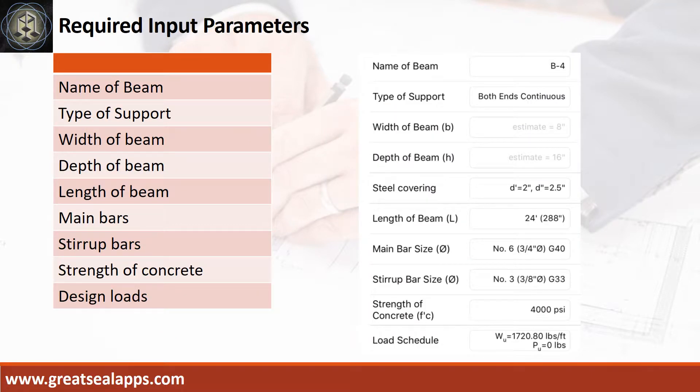Enumerate input parameters required. Name of beam, B4, type of support, both ends continuous, width of beam, 8 inches, depth of beam, 16 inches, length of beam, 24 feet,